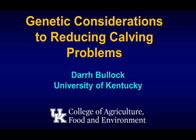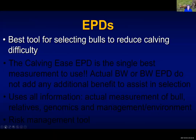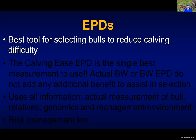We're going to talk about genetic considerations to reducing calving problems. As you guys know from any of my past talks, the EPDs are the tool to go with. It's the best tool that we have for making any of our selection decisions for the traits that are important.